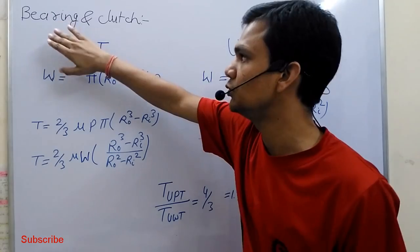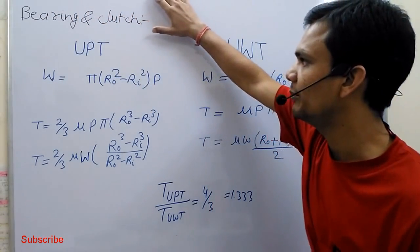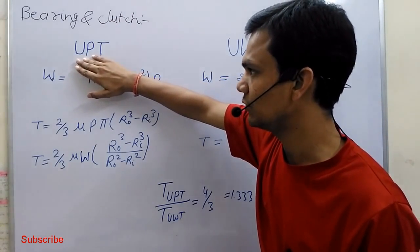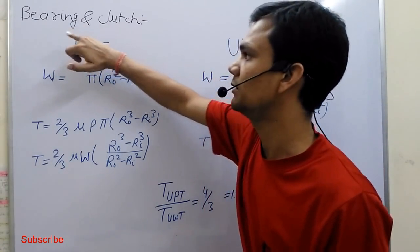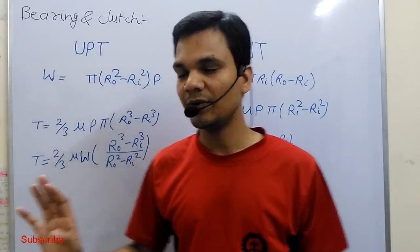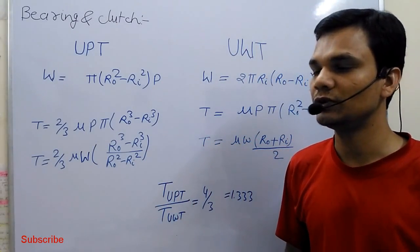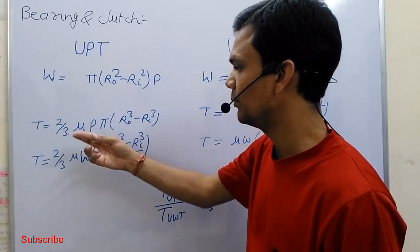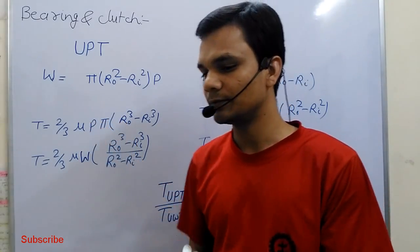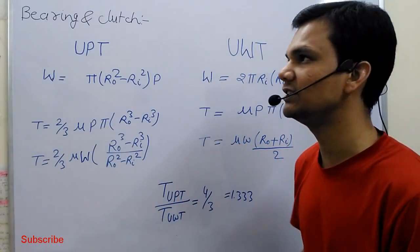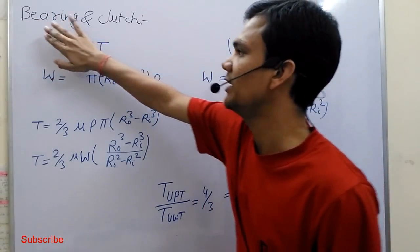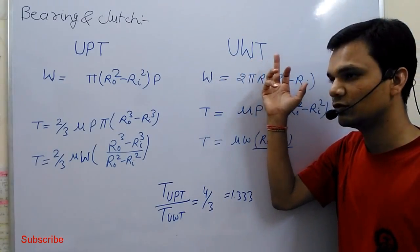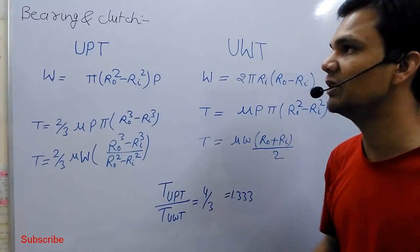The main function of bearing is to resist the load and the main function of the clutch is to transmit power. Both bearing and clutch are designed for the worst condition. In uniform pressure theory, because frictional torque is more, more friction is generated and more heat is generated. So for bearing we generally prefer uniform pressure theory, and for clutch we generally use uniform wear theory.